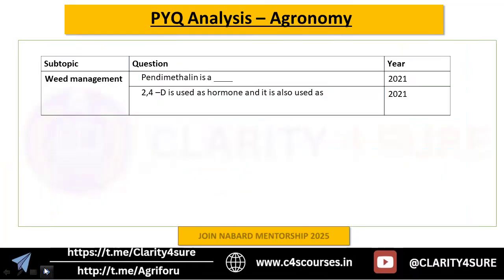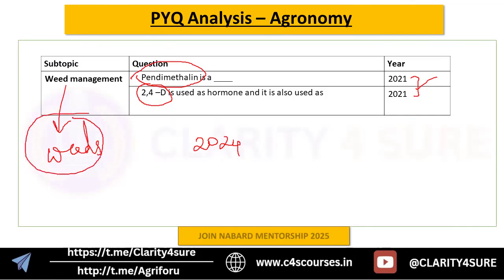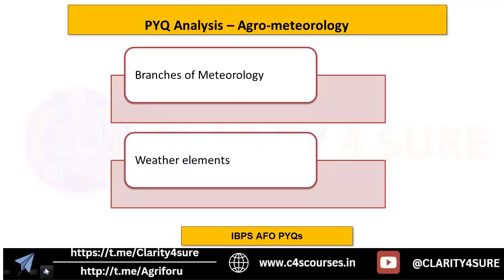For weed management, only two questions have come, both related to herbicides — pendimethalin and 2,4-D — and both appeared in 2021 only, with no weed management questions from 2022 to 2024. For preparation, be clear about weeds associated with major crops, major herbicides and their formulations, and the classification of weeds including what a satellite weed is.